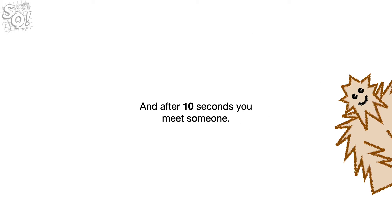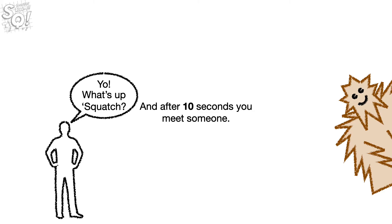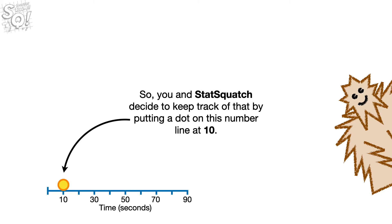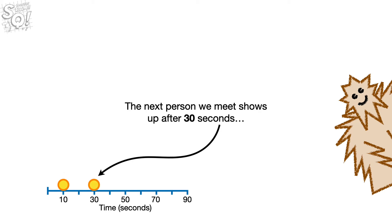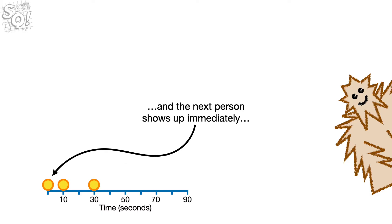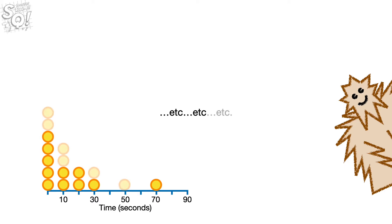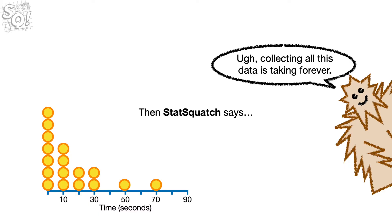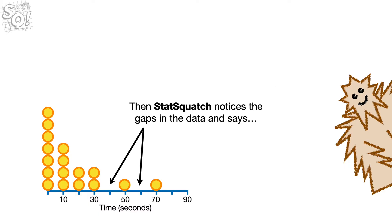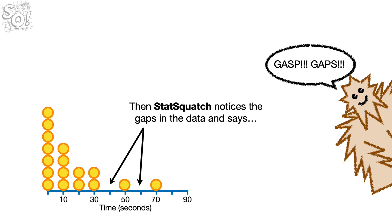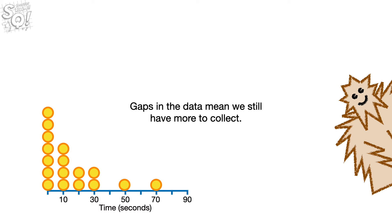After 10 seconds, you meet someone. So you and Statsquatch decide to keep track by putting a dot on a number line at 10. The next person shows up after 30 seconds, and the next person shows up immediately, and the next in 10 seconds, et cetera. Then Statsquatch says, 'Collecting all this data is taking forever,' and notices the gaps in the data: 'Gaps! Gaps in the data mean we still have more to collect.'